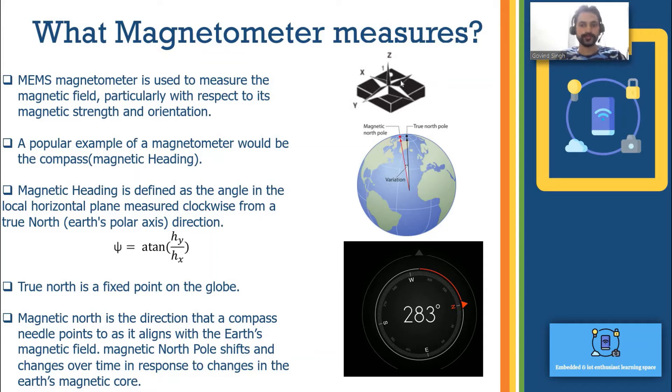If you see this is a MEMS magnetometer. I have X axis, Y axis, Z axis. This is a tri-axis magnetometer. It can measure magnetic field experience in X axis, Y axis and the Z axis. MEMS magnetometer is used to measure the magnetic field particularly with respect to its magnetic strength and the orientation. Orientation is referred to all the three axes.